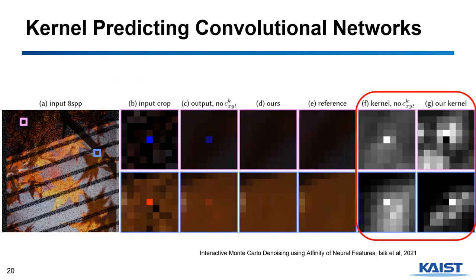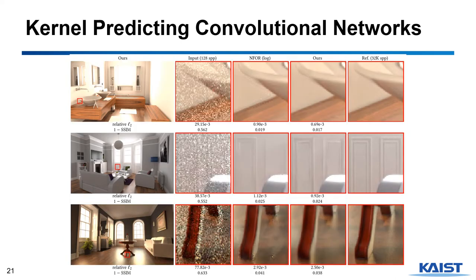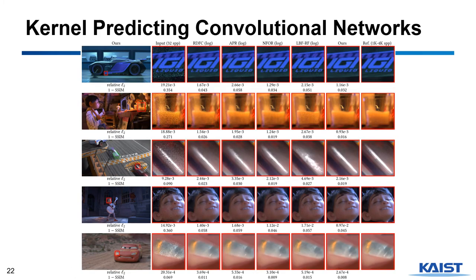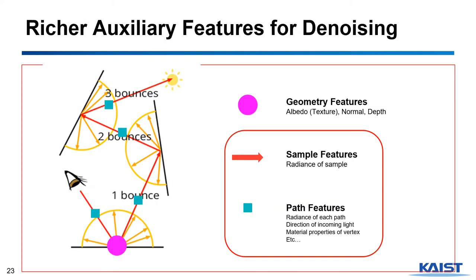This figure is the visualization of the kernel predicted by the work. The kernel emphasizes nearby pixels which are highly correlated to the center pixel, and those emphasized pixels are highlighted in the kernel. The kernel-predicting convolutional network shows better denoising results compared to traditional ones, thanks to generalization. We can see that the denoiser successfully reconstructs small details, specular effects, and transient effects.